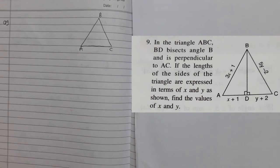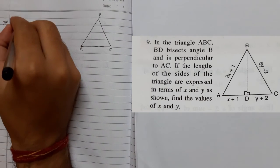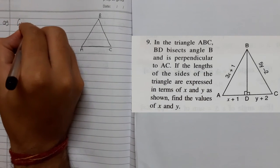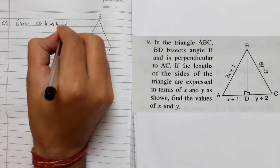In our next question, it is given that in triangle ABC, BD bisects angle B. So the given thing is BD bisects angle B.